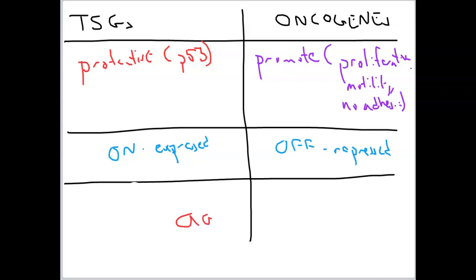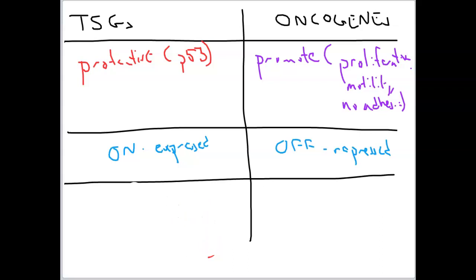The recessive trait, in Mendel's definition, is the trait that you need two identical alleles to show — that's the only way you can show a recessive trait. So if this is blue eyes and this is blue eyes, the only way you're going to have blue eyes is by having two identical alleles. The recessive trait is the trait that you do not see in the heterozygotic condition. The dominant trait is the phenotype; the recessive trait is hidden, or not the phenotype.